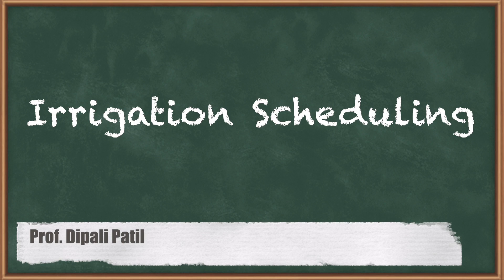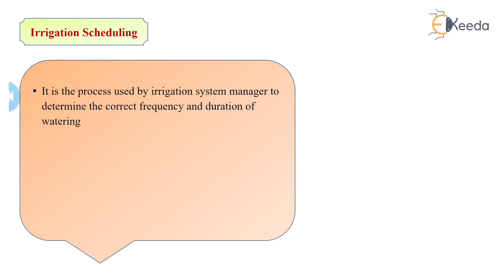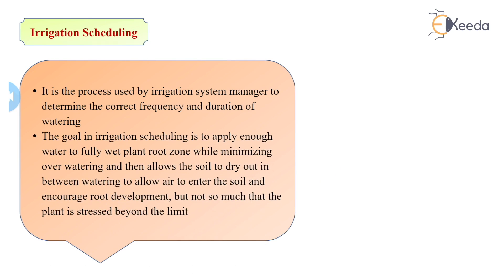The last part and the last objective is to study the irrigation scheduling. Irrigation scheduling is a process used by irrigation system managers to determine the correct frequency and duration of watering. The goal is to apply enough water to fully wet plant root zones while minimizing overwatering, and then allow the soil to dry out between watering periods to allow air to enter the soil and encourage root development, but not so much that the plant is stressed beyond the limit.